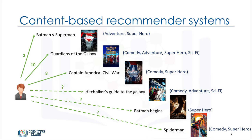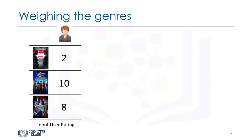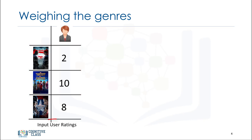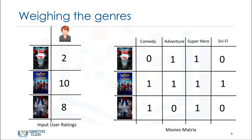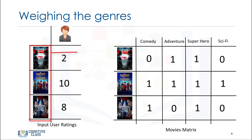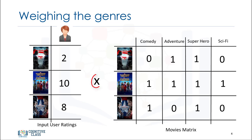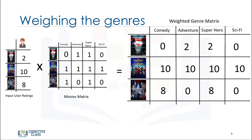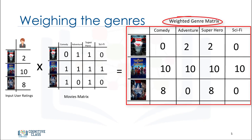To achieve this, we have to build the user profile. First, we create a vector to show the user's ratings for the movies that she's already watched — we call it Input User Ratings. Then, we encode the movies through the one-hot encoding approach. Genre of movies are used here as a feature set. We use the first three movies to make this matrix, which represents the Movie Feature Set Matrix. If we multiply these two matrices, we can get the Weighted Feature Set for the movies. This matrix is also called the Weighted Genre Matrix, and represents the interests of the user for each genre based on the movies that she's watched.